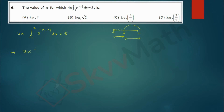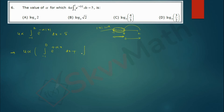We write 4α times: integration from minus 1 to 0 of e^(−α·(−x)) dx, because when x is in [−1, 0], x is negative so |x| = −x. Then plus integration from 0 to 2 of e^(−α·x) dx, because when x is in [0, 2], x is positive so |x| = x.